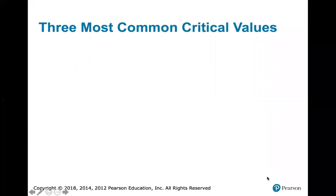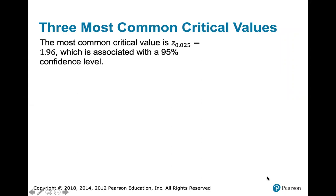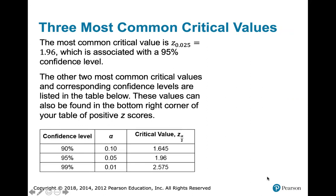That was for a confidence interval of 86%, which is not common. Most of the time we use confidence intervals of 95% — that's the most common — or 99% or 90%. For 95%, the z-score is z sub 0.025, which equals 1.96. The other two most common critical values correspond to the 90% and 99% confidence levels.